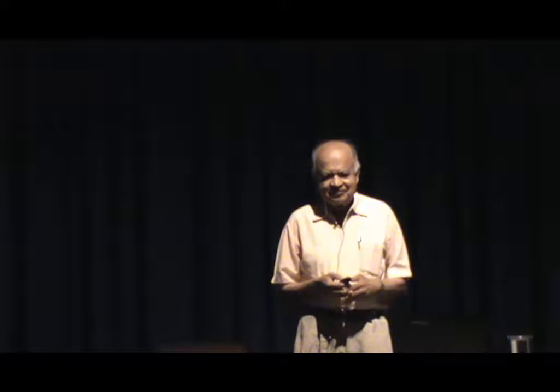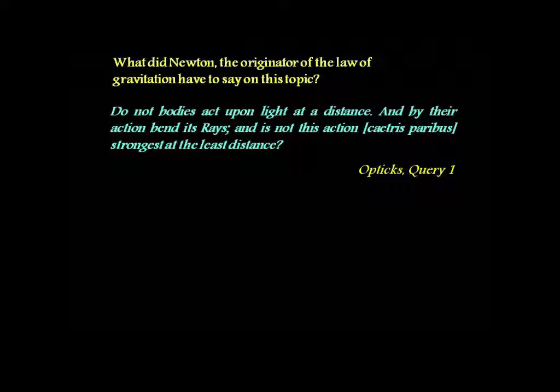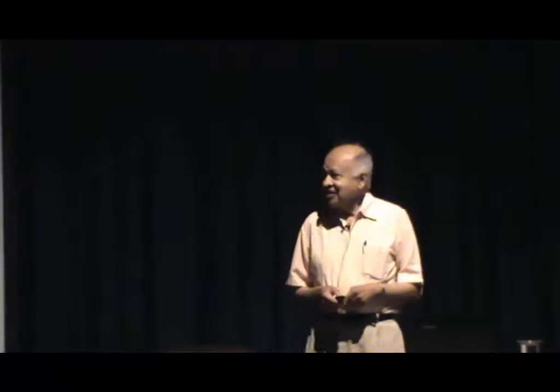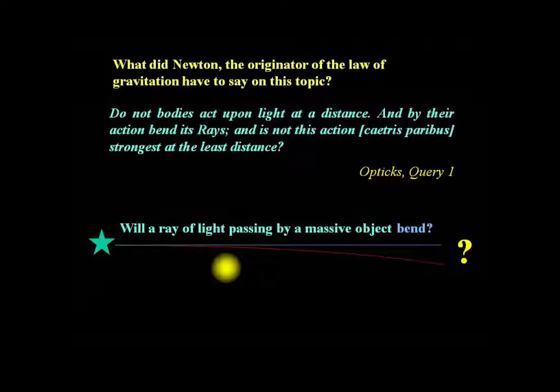Newton had this question bothering him. The question is: do not bodies act upon light at a distance, and by their actions bend its rays? And is not this action strongest at the least distance? He is asking: when light travels near a very massive body, a massive body will attract any other body to itself — but is it possible for massive bodies to attract light also? So this is Newton's query.